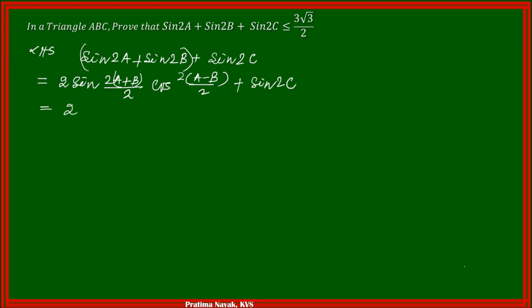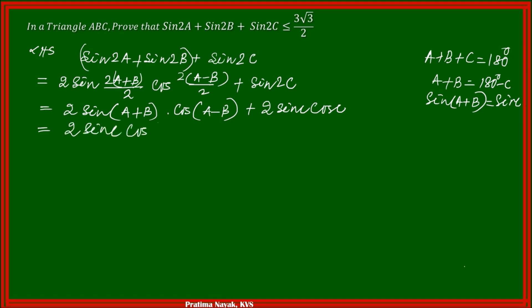In the next step it will be 2 sin of A plus B cos of A minus B plus 2 sin of 2C. Now when A plus B plus C equals 180 degrees, A plus B equals 180 minus C. So sin of A plus B equals sin 180 minus C, which is the same as sin C.